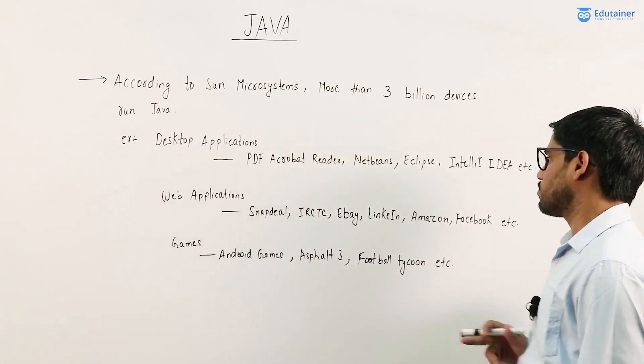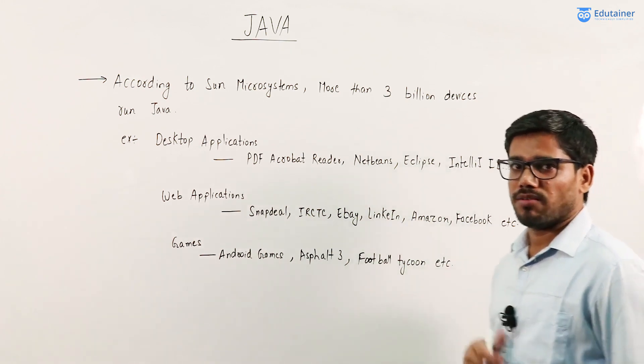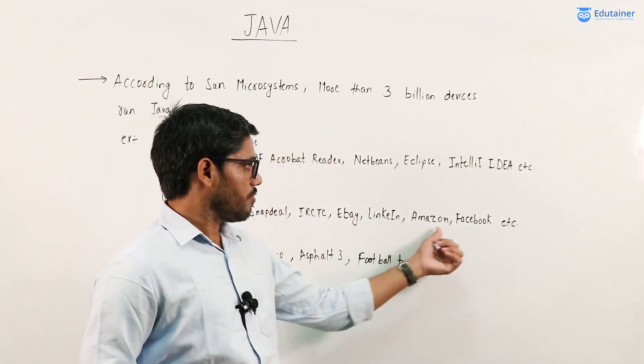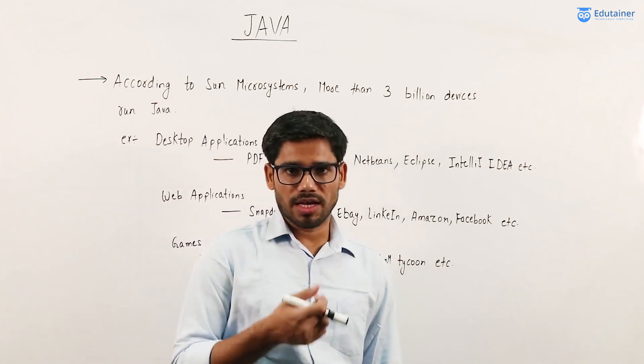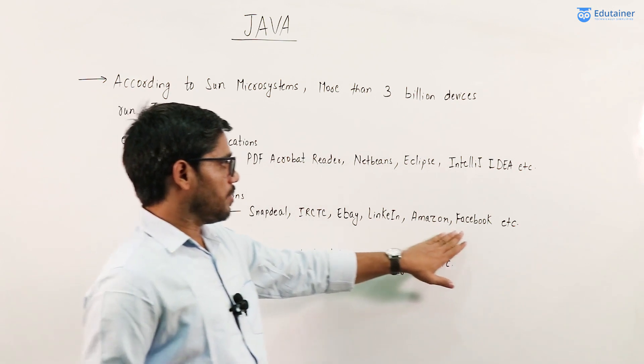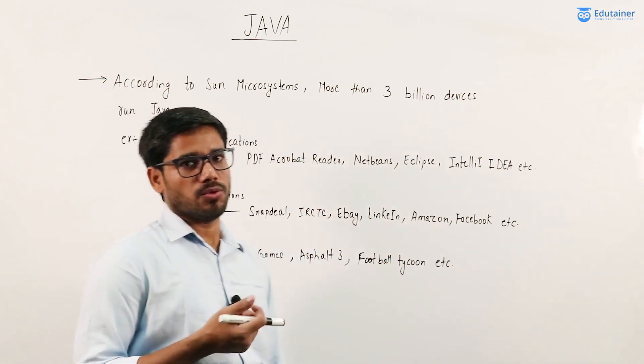Amazon and Facebook use Java language to develop their applications, along with other technologies.